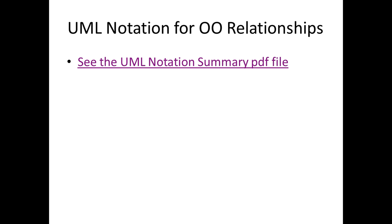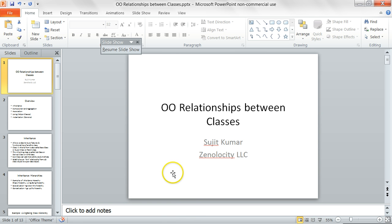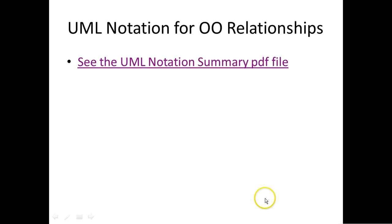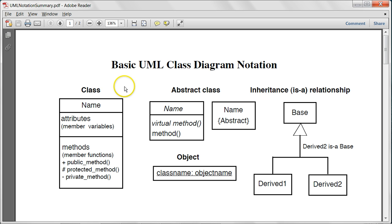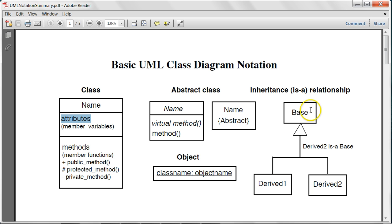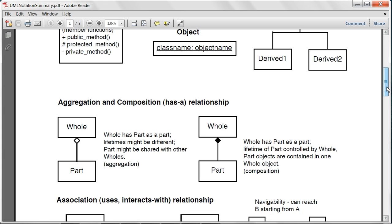Now let's look at the UML notation for object-oriented relationships. The basic notation for a class is: put the class name, then the attributes, then the methods, with lines separating each section. You can use signs like plus for public methods, hash for protected methods, and minus for private methods. For inheritance, which is an is-a relationship, you use a triangle — the base class or parent class is at the top, and the derived classes or subclasses are below it. So derived one is a base and derived two is a base. The triangle denotes inheritance.